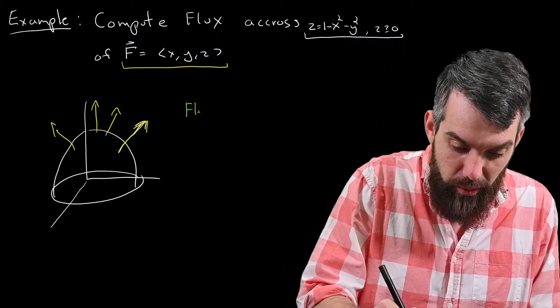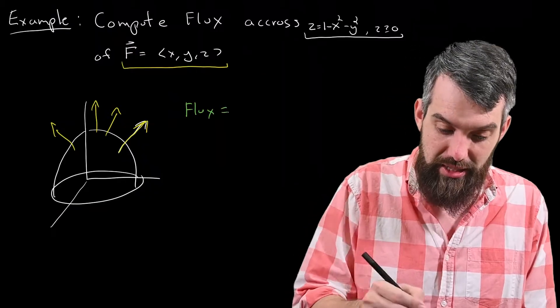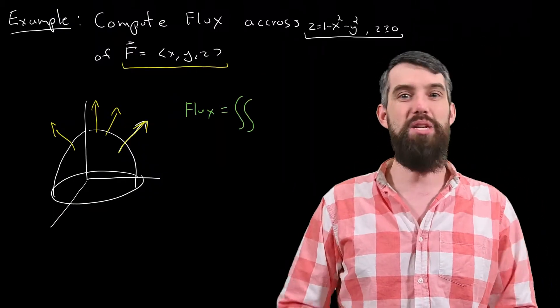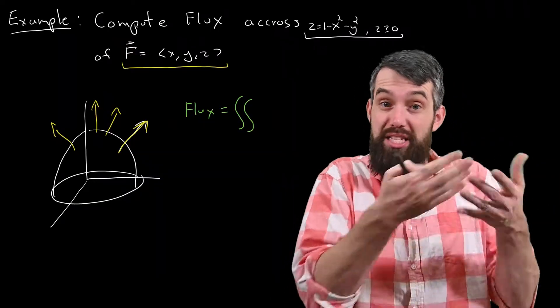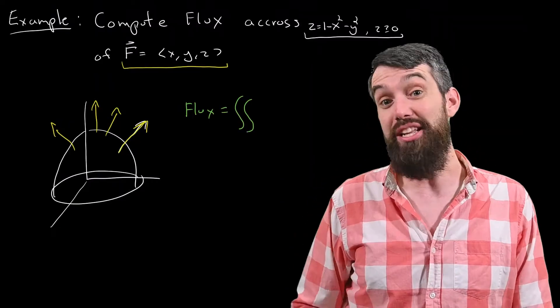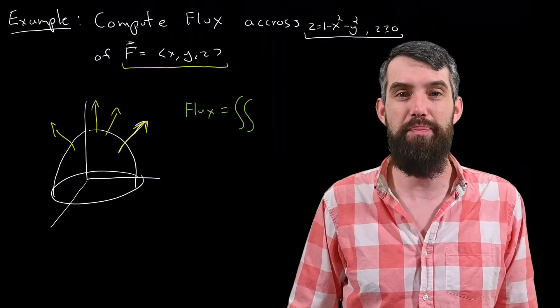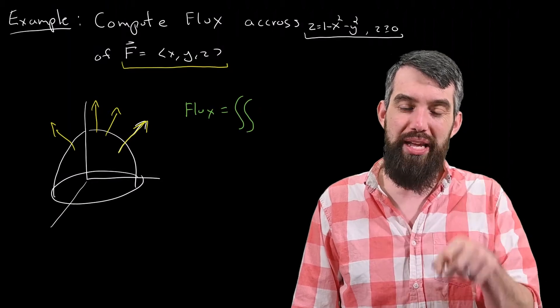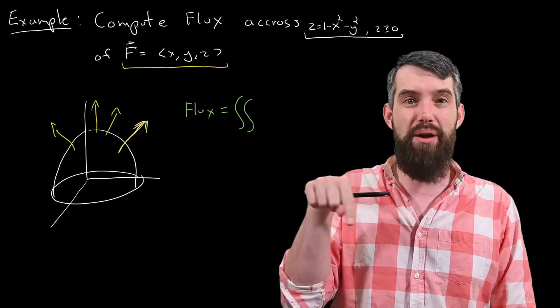And then finally, what's the formula I'm going to use? Well, the formula that I will use, that we spent some time deriving in our previous video, is that the flux is the double integral. Now I have a bit of a choice, because it depends on whether I want to consider the flux formula for a surface described parametrically, or explicitly, or implicitly. In this case, my surface is described explicitly. z is 1 minus x squared minus y squared.